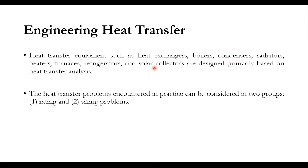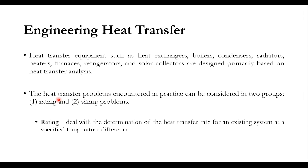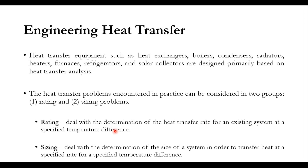دو طرح کی problems ہوتی ہیں: ایک sizing اور ایک rating۔ Rating deal کرتی ہے with the determination of heat transfer rate for an existing system at a specified temperature — یعنی ایک system موجود ہے، آپ نے صرف calculate کرنا ہے کہ اس system کا heat transfer rate کیا ہے۔ اور جو sizing ہے وہ بالکل نئے سرے سے design ہے — آپ نے پورے system کو design اور size کرنا ہے in order to transfer heat at a specified rate for a specified temperature difference۔ Rating میں heat transfer rate معلوم نہیں ہوتا، sizing میں آپ کو rate پتا ہوتا ہے۔